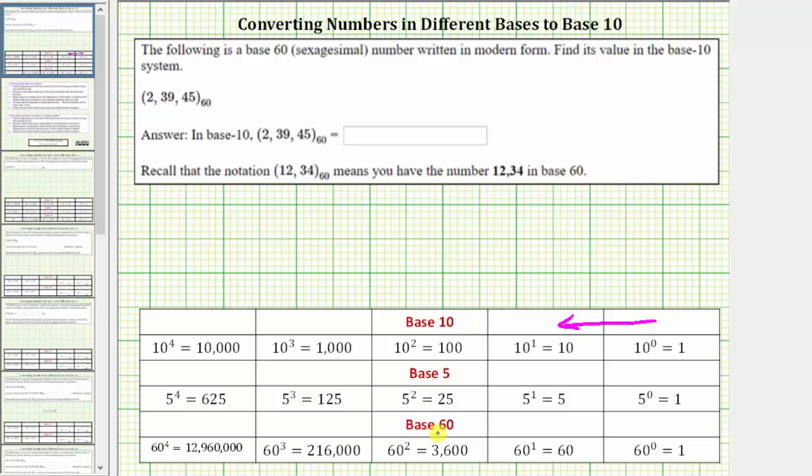Similarly, in the base 60 system, all place values are powers of 60. Starting on the far right again, we have 60^0 or ones place, 60^1 or sixties place, 60^2 or 3,600s place, and so on. Notice all place values are powers of 60, and therefore each place value can contain a whole number from zero to 59.